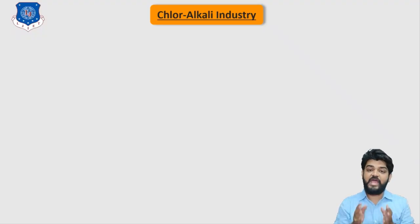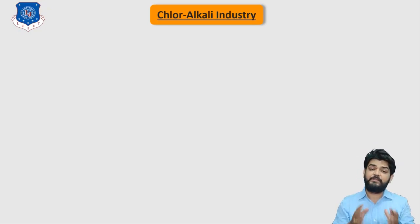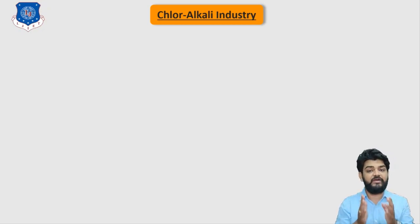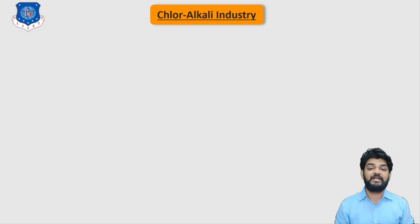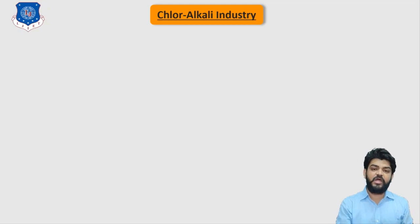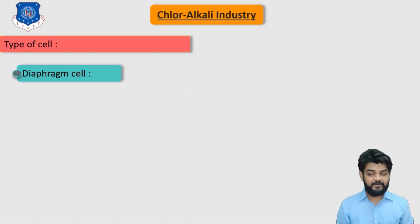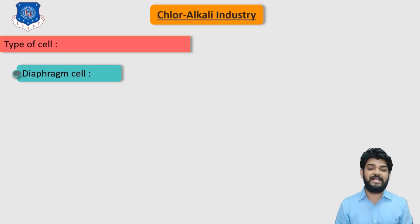In the previous video we continued the chapter of chloroalkali industries and understood the production method for NaOH and chlorine gas by electrolysis of brine solution. Now let's continue our discussion. In this particular video we will explore the different types of cells that can be used to manufacture NaOH and chlorine gas.